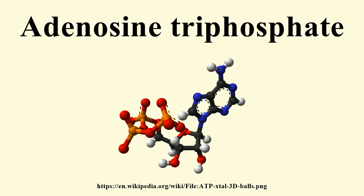ATP is synthesized in the thylakoid membrane of the chloroplast during the light-dependent reactions of photosynthesis in a process called photophosphorylation. Here, light energy is used to pump protons across the chloroplast membrane, producing a proton motive force that drives the ATP synthase, exactly as in oxidative phosphorylation. Some of the ATP produced in the chloroplasts is consumed in the Calvin cycle, which produces triose sugars.